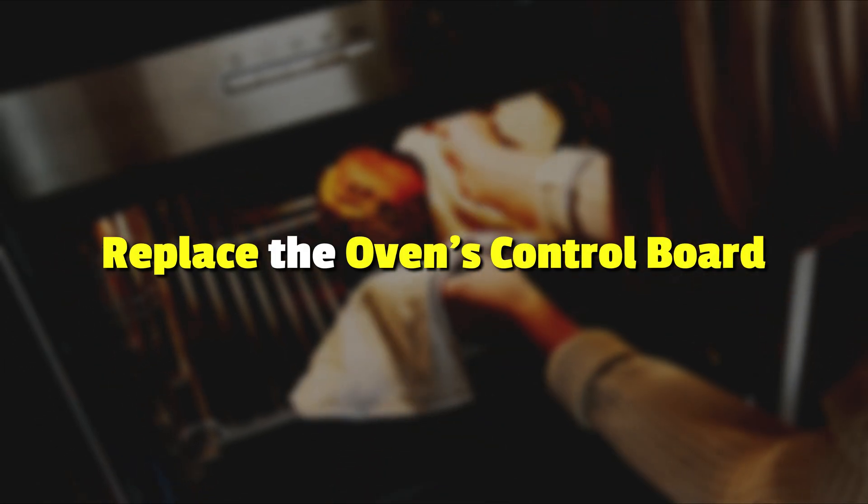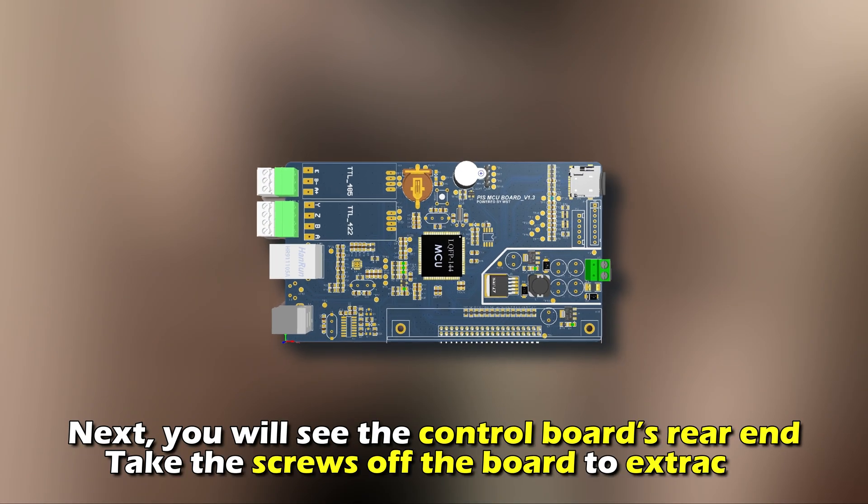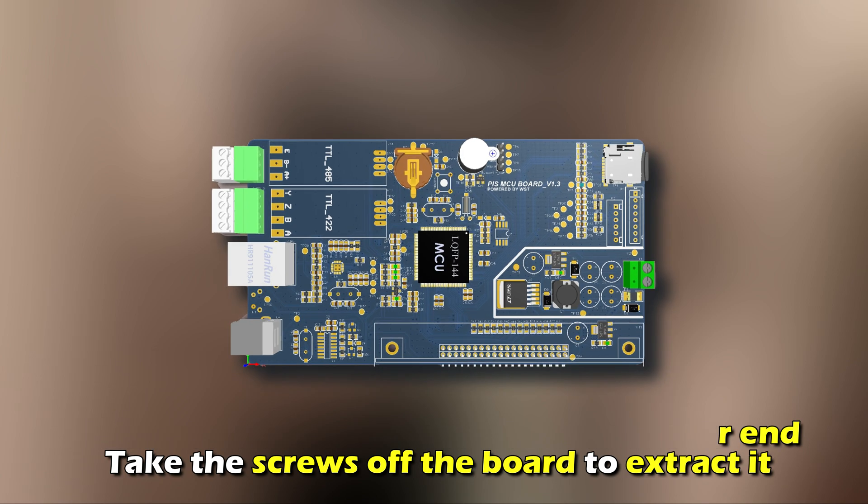Replace the oven's control board. Take out the console's access panel screws and remove it. Next, you'll see the control board's rear end. Take the screws off the board to extract it.